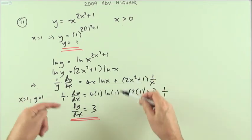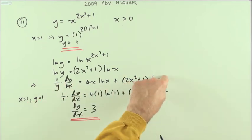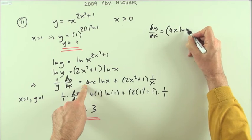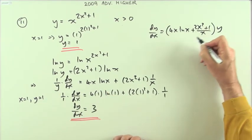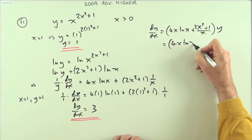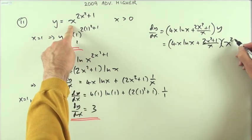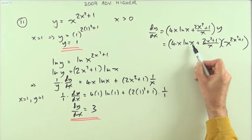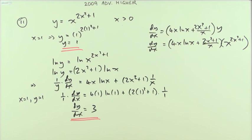And that would be it done. If I had wanted to tidy that up, what I could have done is take that y across, so dy/dx equals 4x ln x plus 2x² plus 1, over x, times y — which would be 4x ln x plus 2x² plus 1, all over x, times x to the power 2x² plus 1. You could tidy up further by putting the 4x in to make ln of x to the 4x, but as soon as you've got your expression, just put in the numbers, because then it's just a matter of arithmetic.